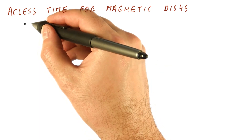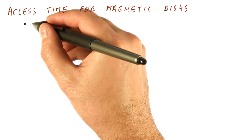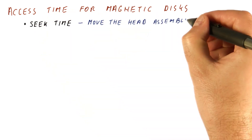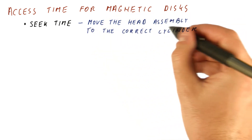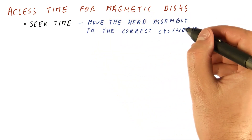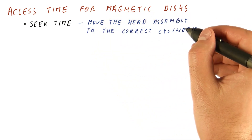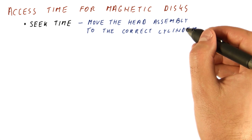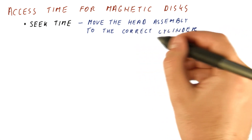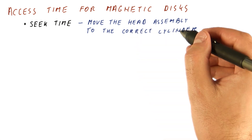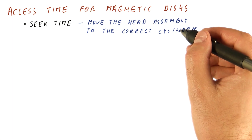If the disk is spinning, then the access time consists of the seek time, which is the time it takes to move the head assembly to the correct cylinder for our data. We know where the data is — which cylinder, which sector, which surface. We first have to get the heads so that they are above the correct cylinder, at which point one of the heads will be above the track where our data really is.